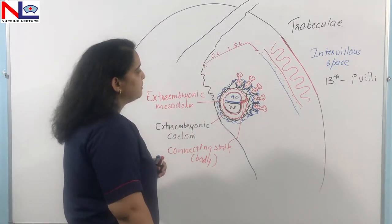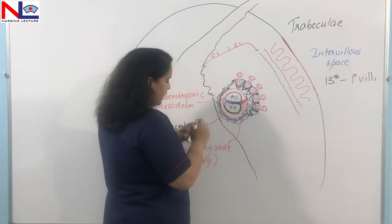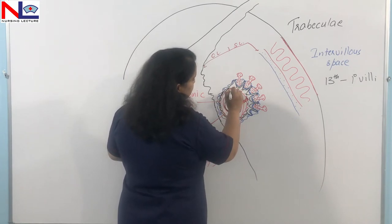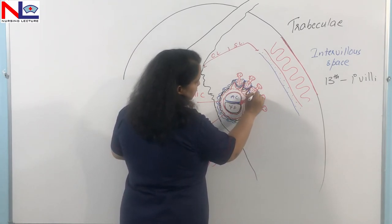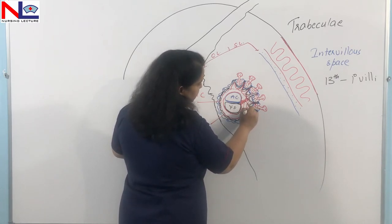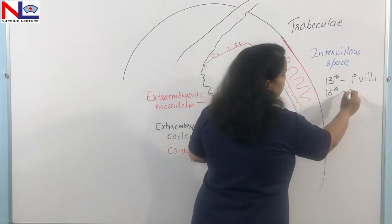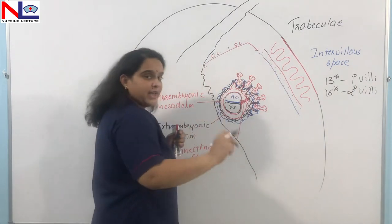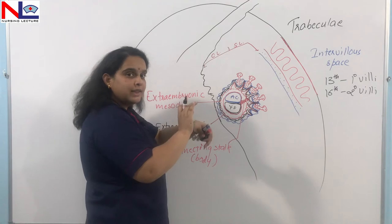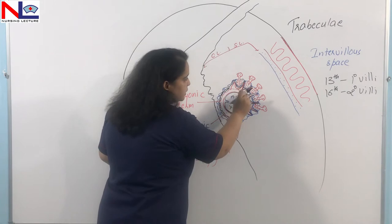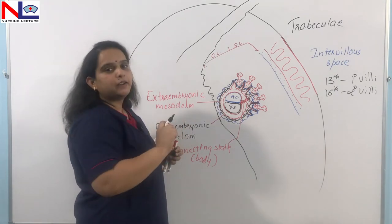After that, the extra-embryonic mesodermal lining enters into these villi. By day 16, as the mesodermal lining enters into these finger-like projections, secondary villi are formed — consisting of an outer syncytiotrophoblast, an inner cytotrophoblast, and a core of extra-embryonic mesoderm.